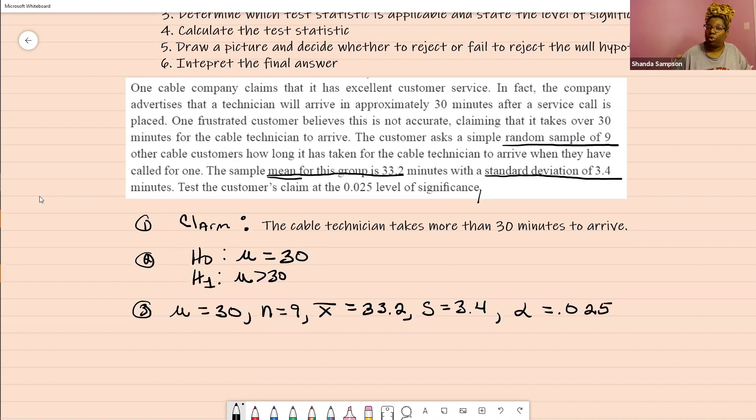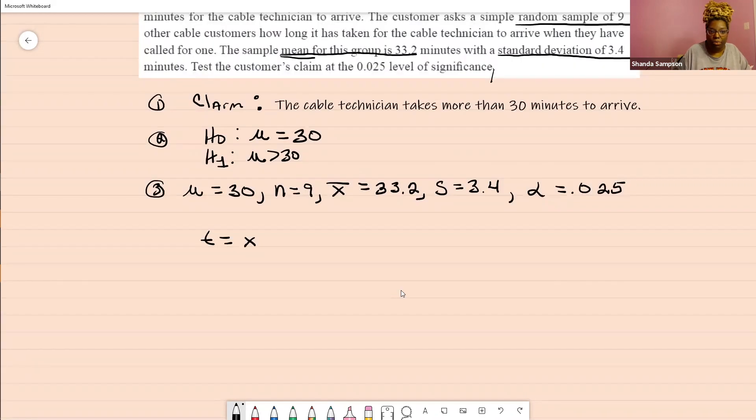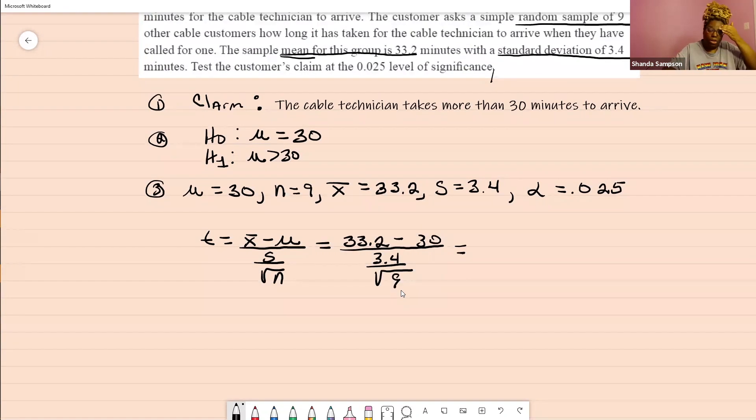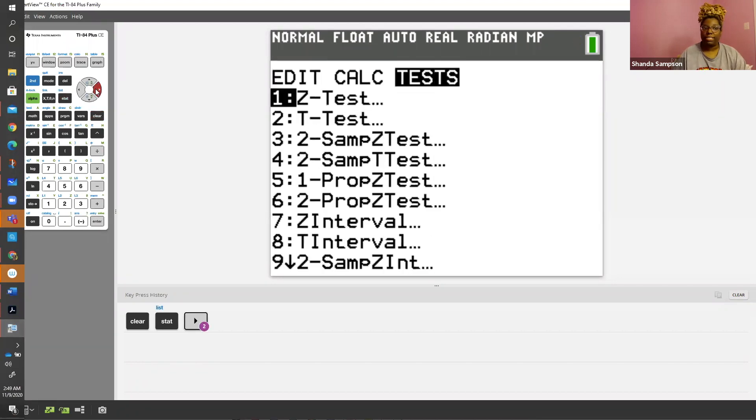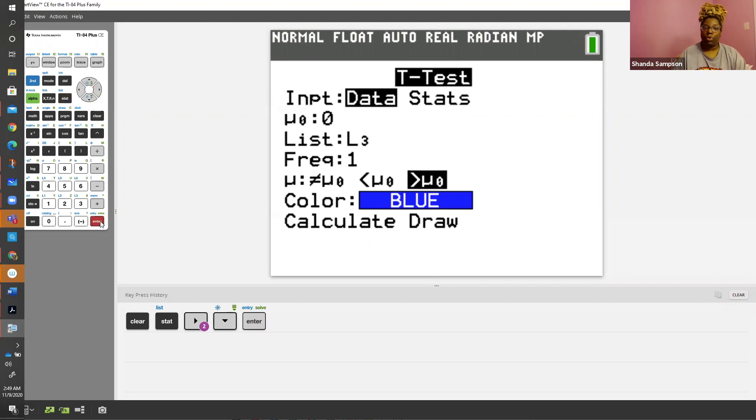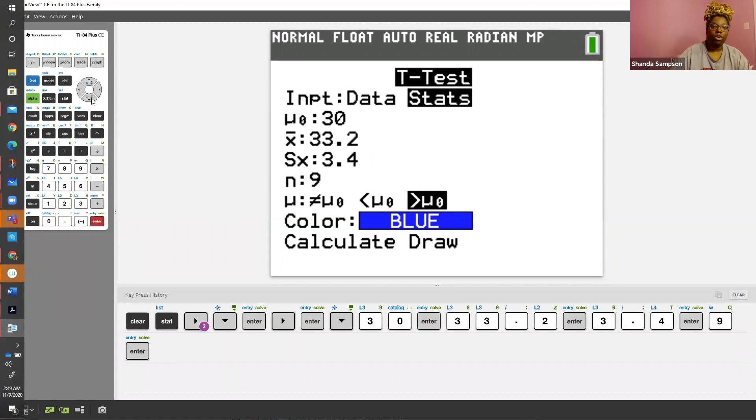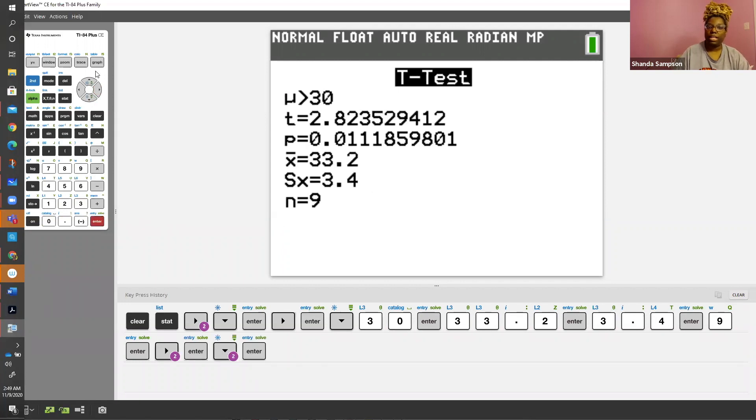What kind of test statistic are you going to be using? We don't know the population standard deviation. We're going to use a T. T equals x-bar minus mu all over S over the square root of N. You're going to go to stat over to test. Obviously a T test, not a Z test. When you get here, you have to write what your alternate is and your alternate was greater than and then calculate. It's telling us T is equal to 2.824.